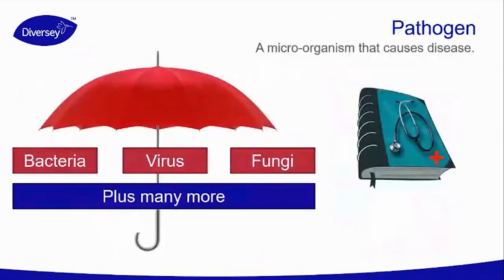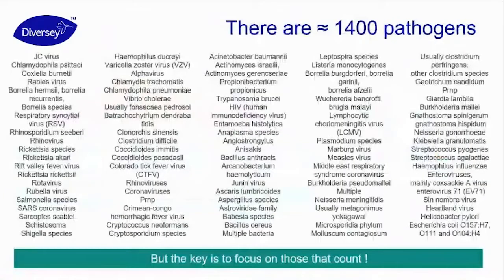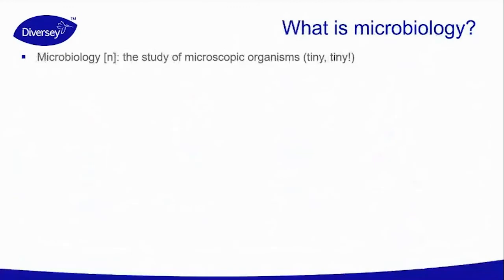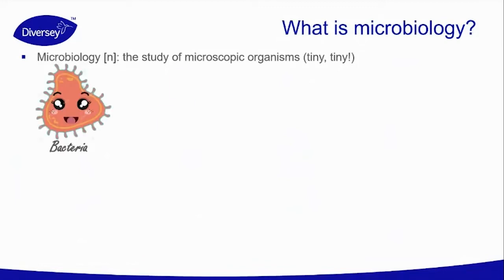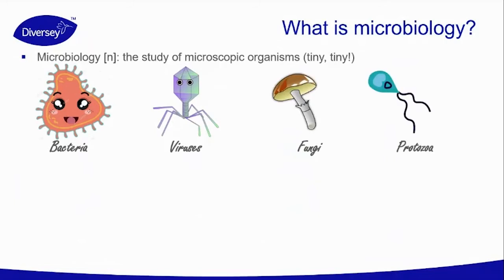What is a pathogen? A pathogen is a microorganism that causes disease. We'll talk about bacteria, viruses, and fungi, but there are many more — about 1400 pathogens. The key is to focus on those that count. Microbiology is the study of microscopic organisms — tiny, tiny. So we'll have bacteria, viruses, fungi, and protozoa.